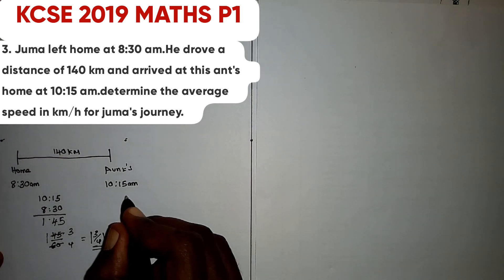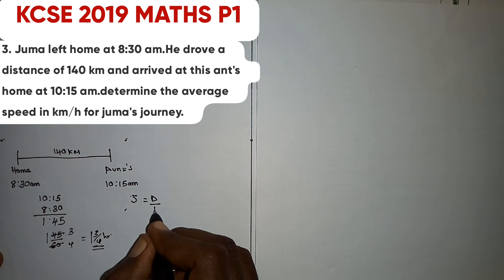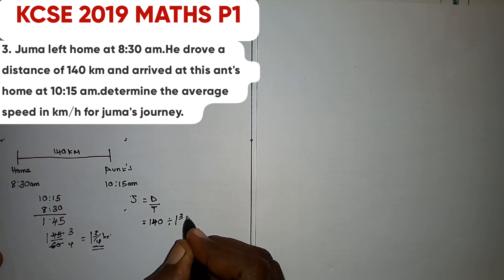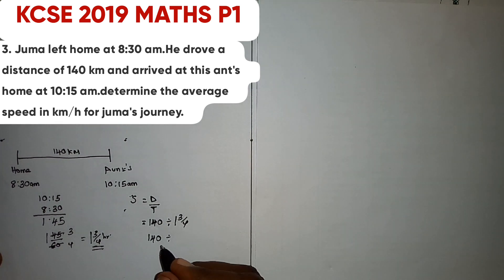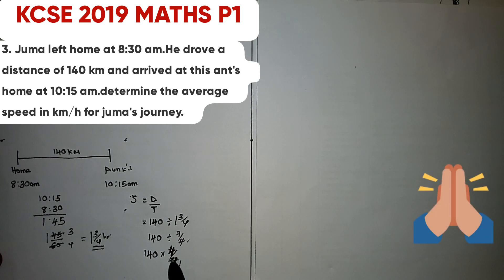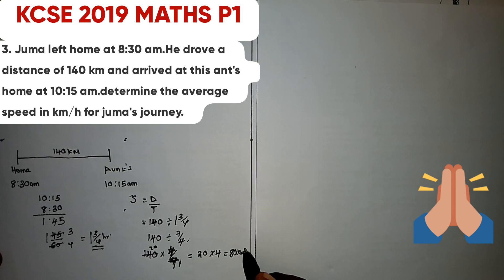Speed equals distance over time. Therefore speed equals 140 divided by 1 and 3/4. We convert: 140 divided by 7/4 equals 140 times 4/7. Simplifying, 140 divided by 7 is 20, times 4 gives 80 kilometres per hour.